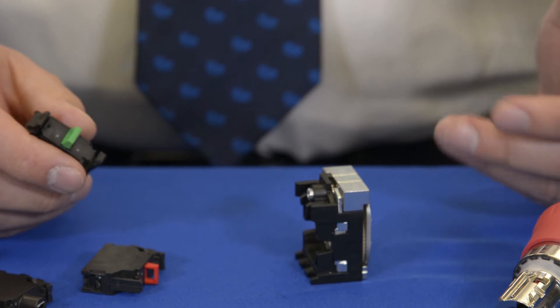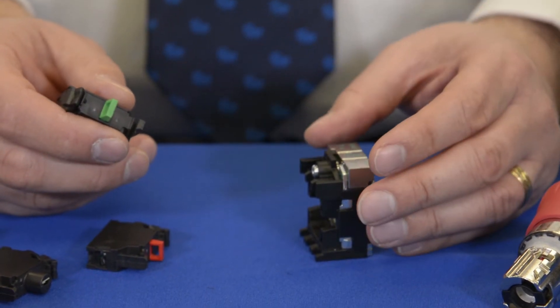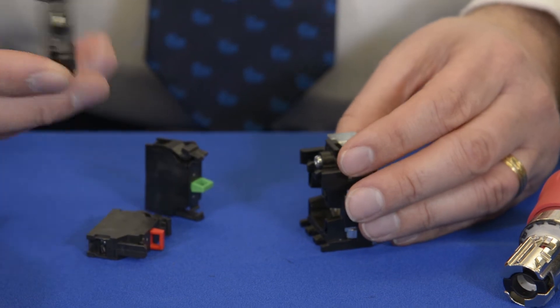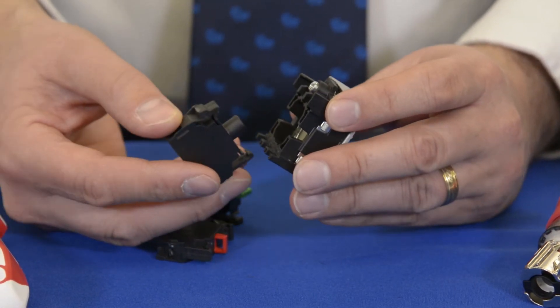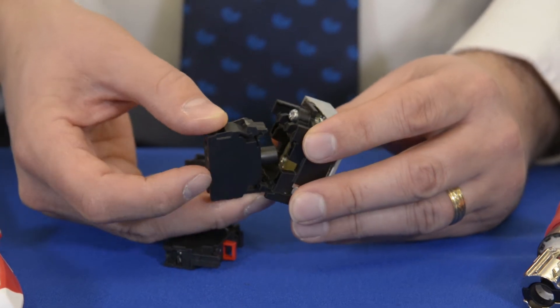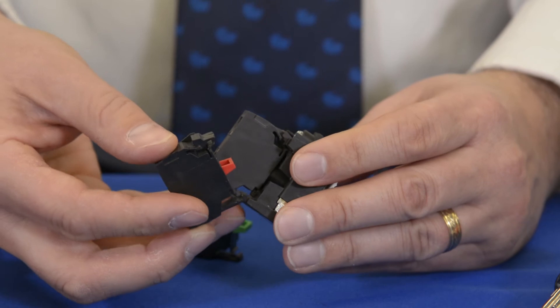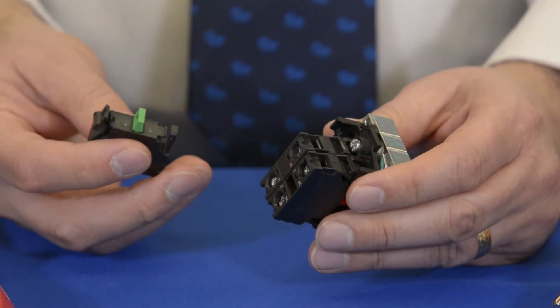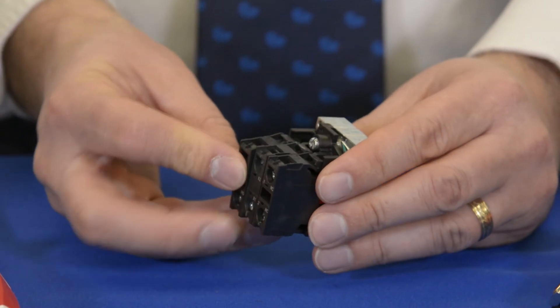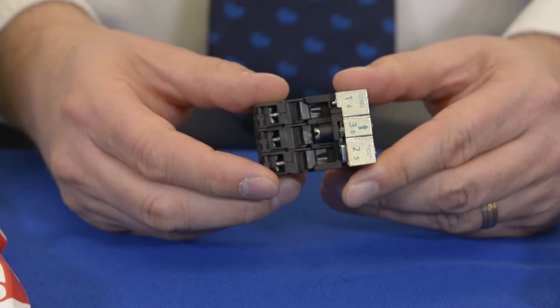Now, if I wanted to add contact blocks to this latch mechanism, it's very easy to apply that. I typically will put the LED, which is always going to go in the center position on first. Insert the small end in the bottom and click in the top end. Put this normally closed contact in next and then this normally open contact block finally. And I'd have two contact blocks and an LED module assembled here.